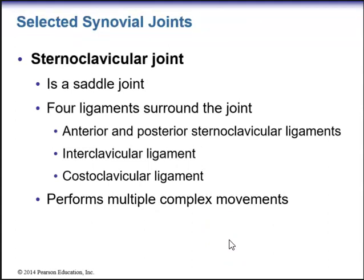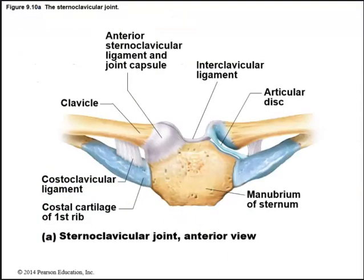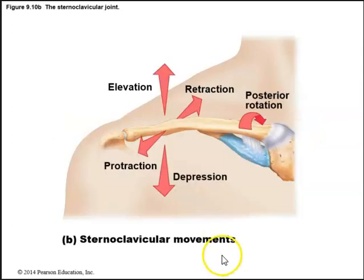Regarding select synovial joints, the sternoclavicular joint has four surrounding ligaments including the anterior and posterior sternoclavicular ligaments, the interclavicular ligament, and the costoclavicular ligament. These help perform multiple complex movements. The sternoclavicular joint is located between the manubrium of the sternum and the clavicle, and it allows elevation, depression, retraction, protraction, and posterior rotation.